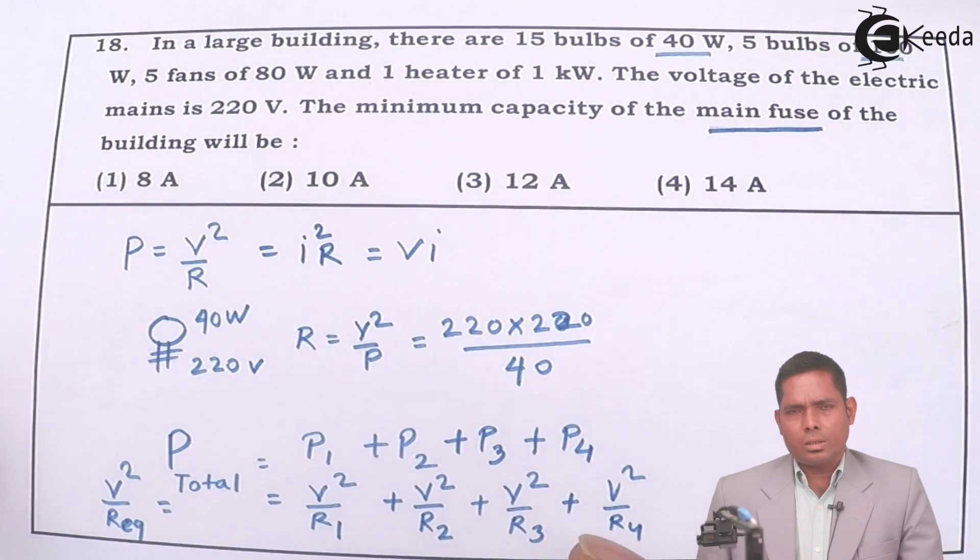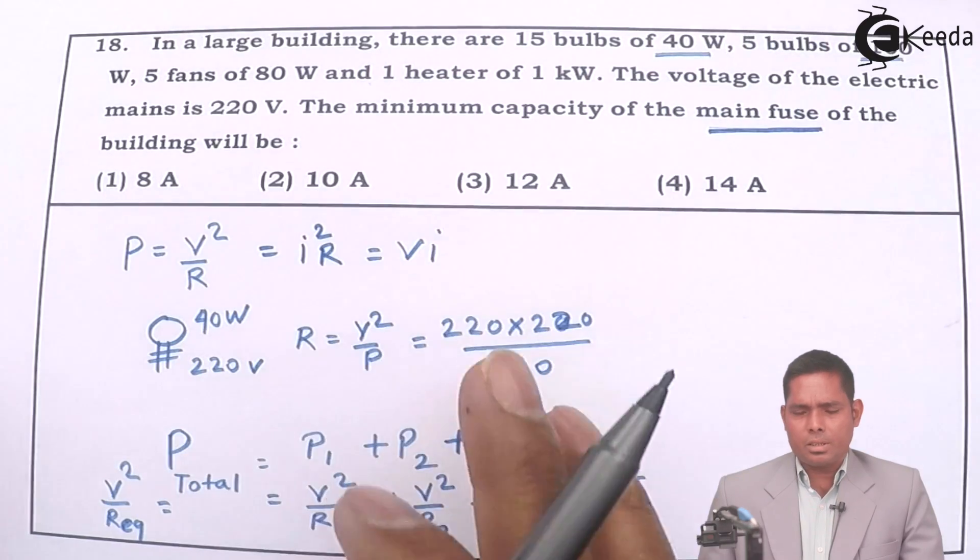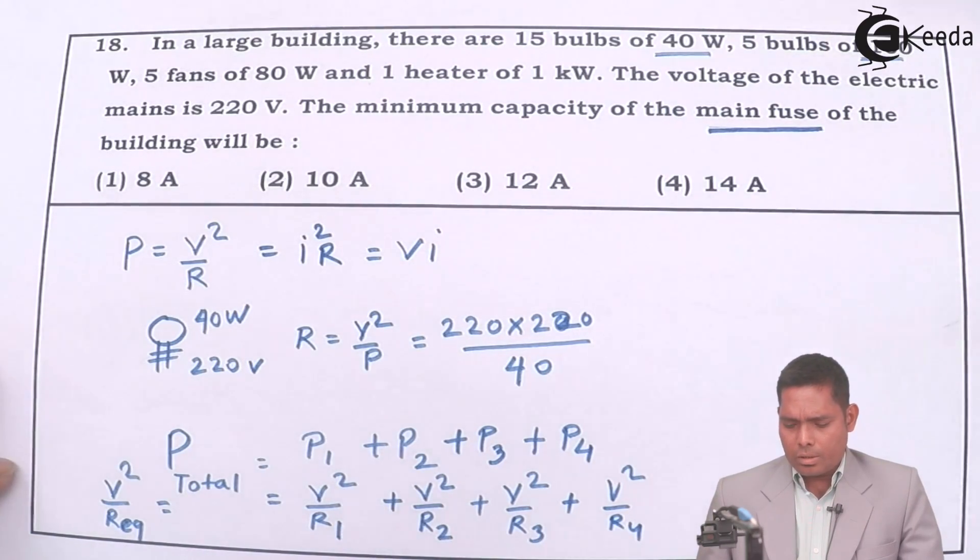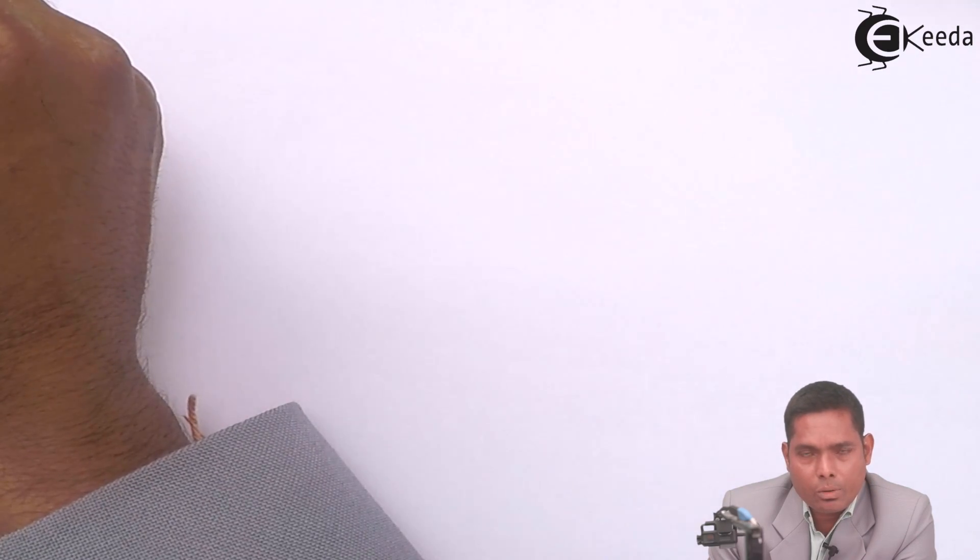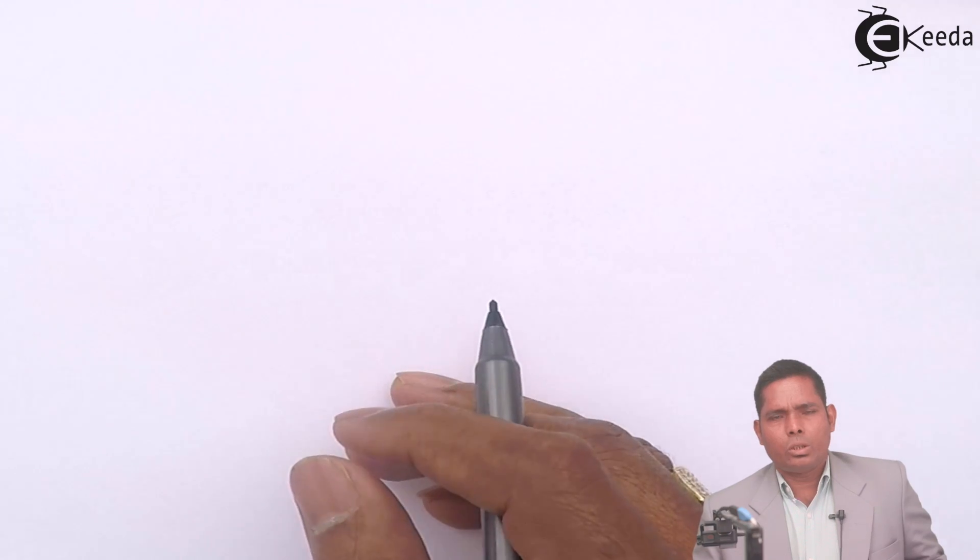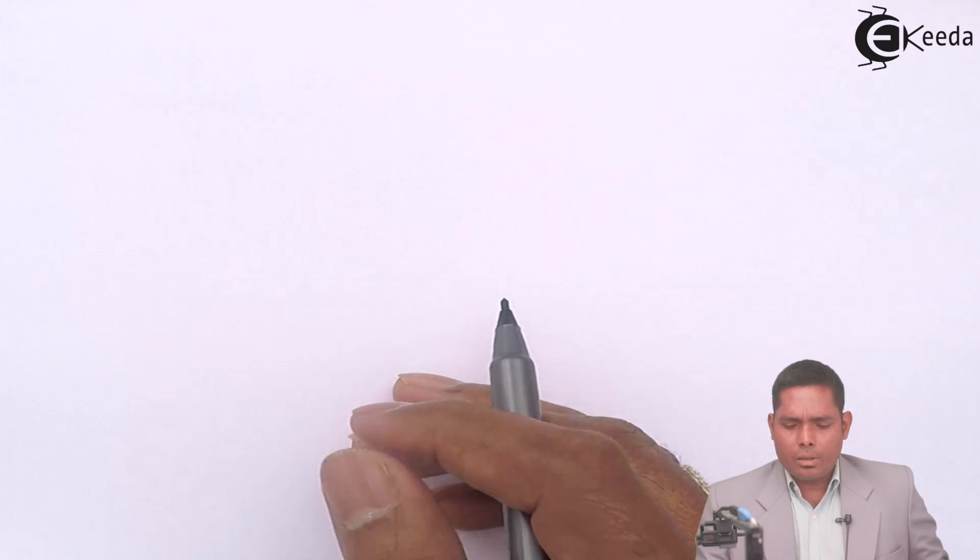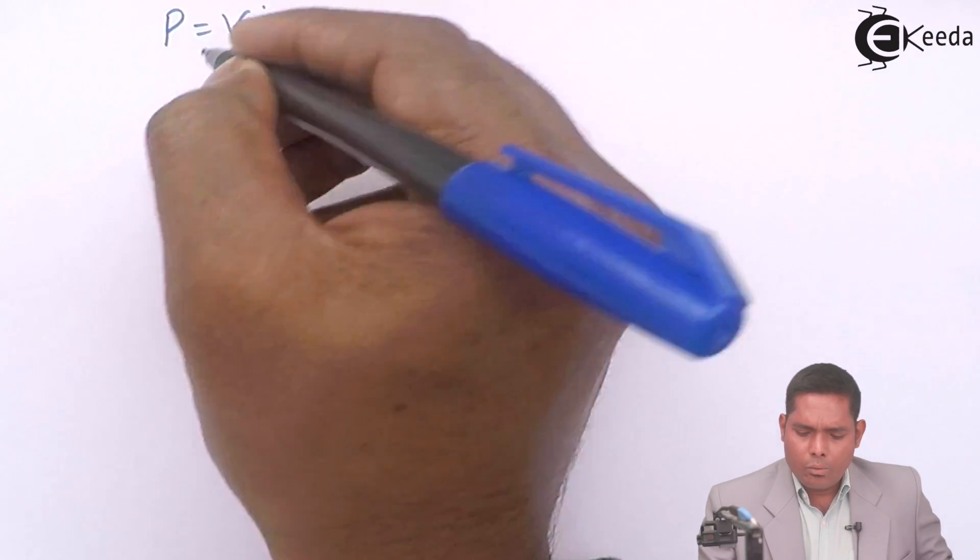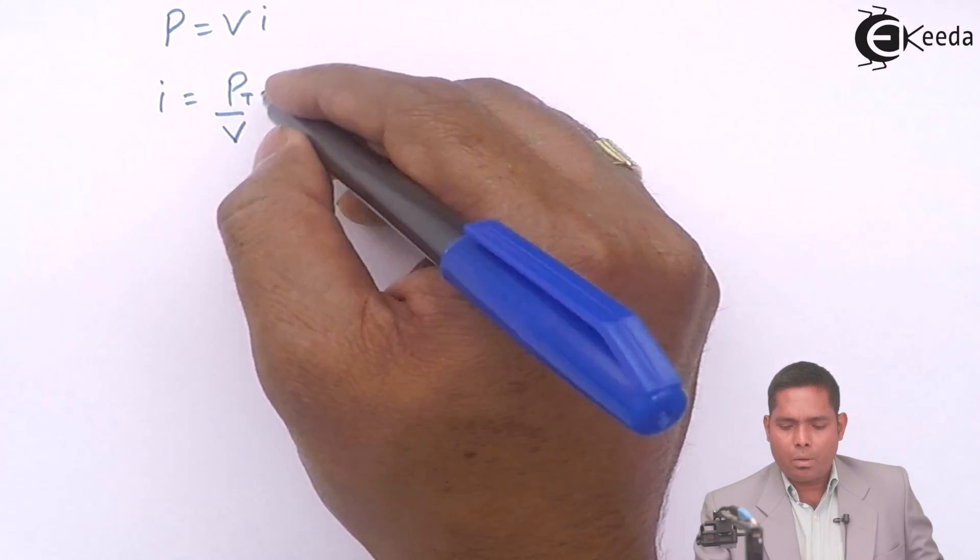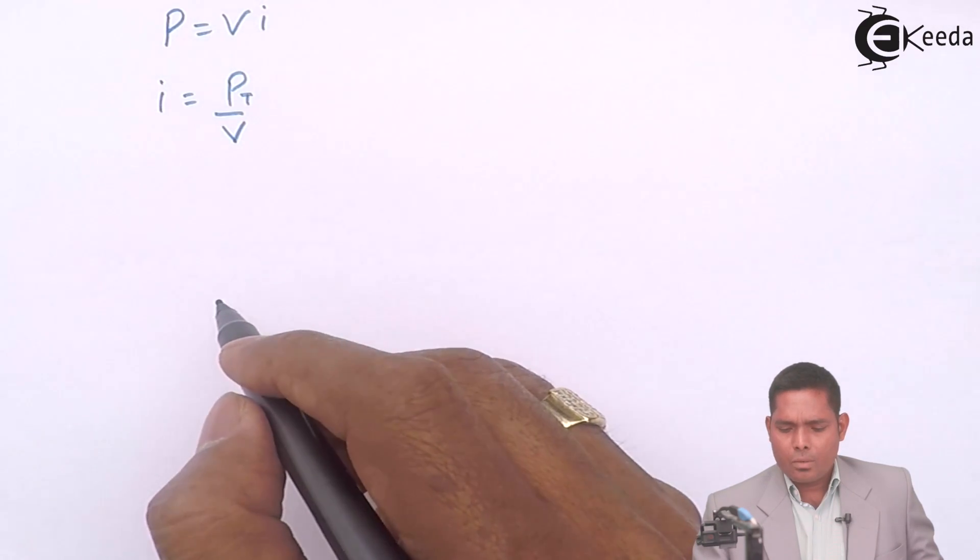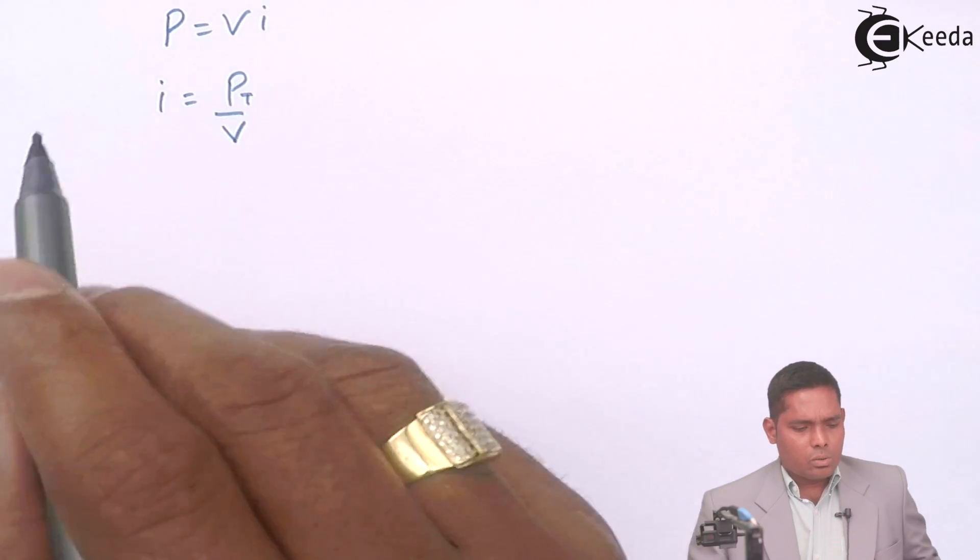The voltage is same for each of the elements because it is in parallel connection. You have to find the current. So P is equal to V into I, equation we will use. And from that, P equals to V into I, we will find what is I? It is P by V. Then P total by V - that is total power that is consumed divided by the supply voltage. So this formula we are going to use, but then you have to find the P total.